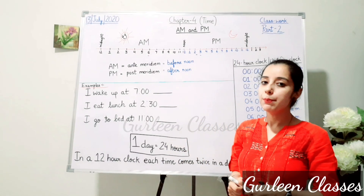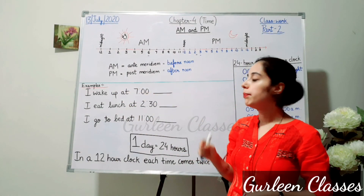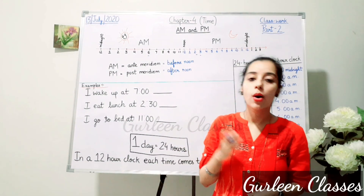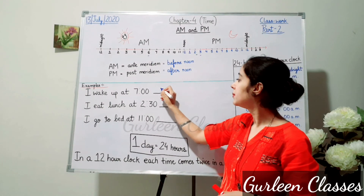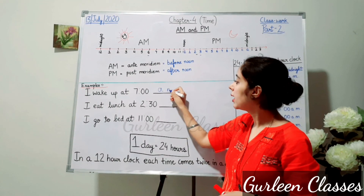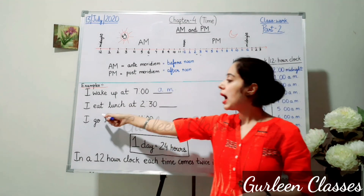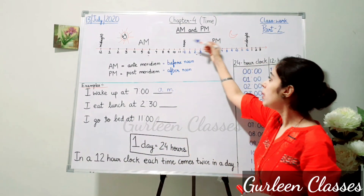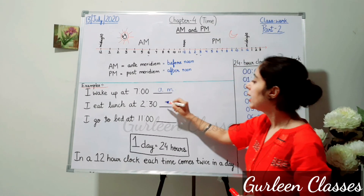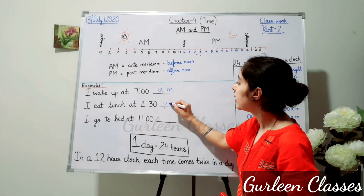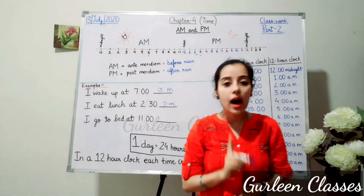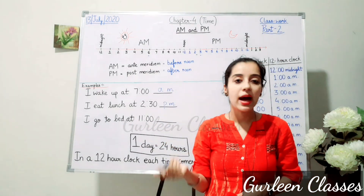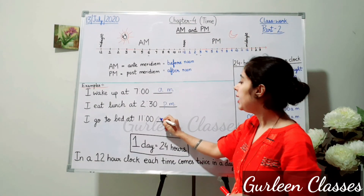Now let us do some examples. I wake up at 7 — we wake up in the morning, so it will be AM. I eat lunch at 2:30 — we usually eat lunch after 12 noon, so it will be PM. I go to bed at 11 — we usually sleep at night, so for night we write PM.